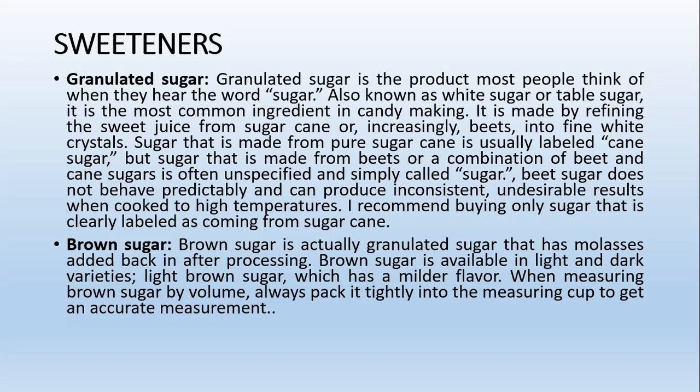The second sweetener is brown sugar. Brown sugar is actually granulated sugar that has molasses added back in after processing. In sugar making, brown sugar is an intermediate product between cane sugar and refined sugar, so it has its own nutritional value. Brown sugar is available in light and dark varieties, with light brown sugar having a milder flavor.